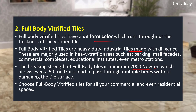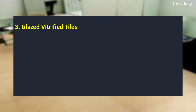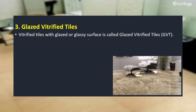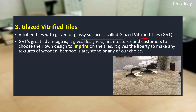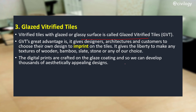Next, glazed vitrified tiles (GVT). A vitrified tile with a glazed or glassy surface is called a glazed vitrified tile. A great advantage of GVT is that it gives designers, architects, and customers the freedom to choose their own design to imprint on the tiles. It provides flexibility to create textures of wood, bamboo, slate, stone, or any design of your choice. These digital prints are crafted on the glaze coating, allowing thousands of aesthetically appealing designs to be developed.